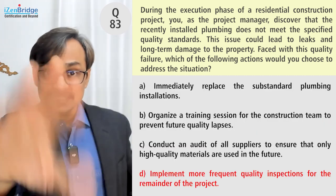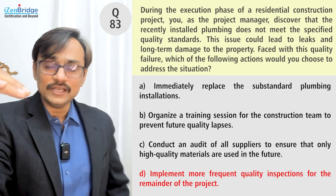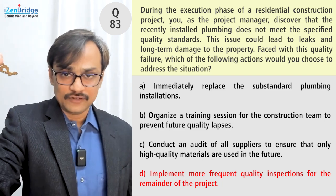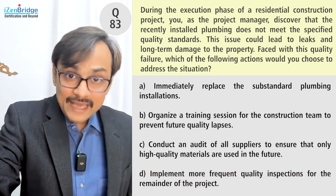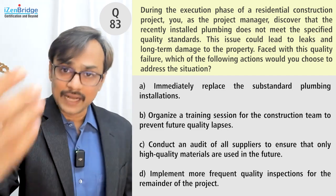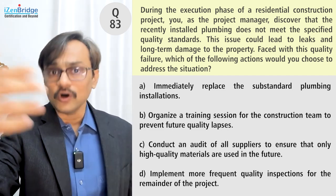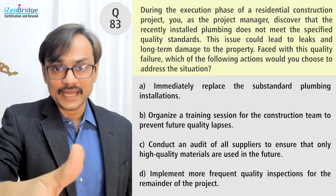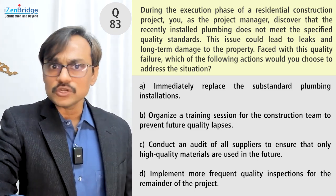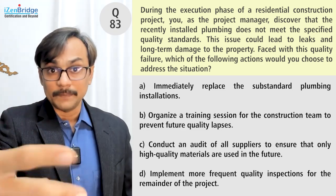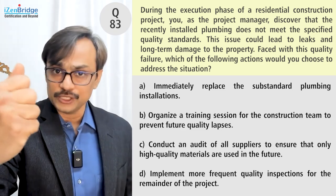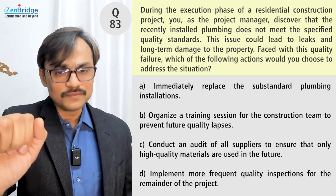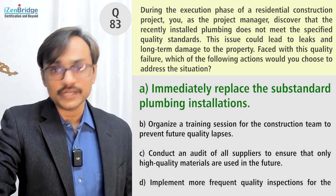The logic is simple: Options B, C, and D all point to prevention, while Option A focuses on correcting the problem first. If there had been an option to recognize the issue, analyze it, log it, and then act on it, I might have chosen that. But since Option A directly jumps to corrective action, it is the best choice compared to the other three — I need to correct the thing first before doing future prevention and problem-solving. So Option A wins.